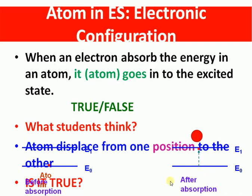Students get the idea that these lines are representations of the ground state and excited state. The ground state is a stable electronic configuration, while the excited state involves a change in electronic configuration. But this representation shows displacement of the atom, causing students to incorrectly understand that the atom physically moves from one position to another. By this way, the representation is not good.